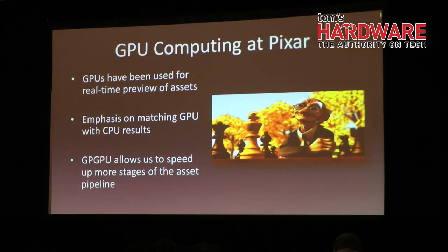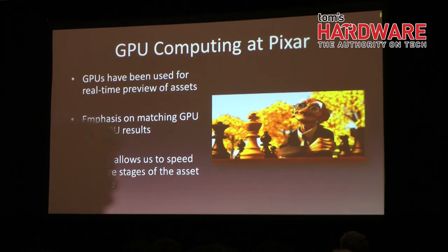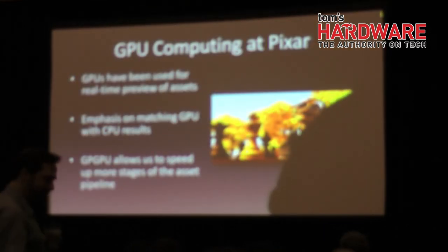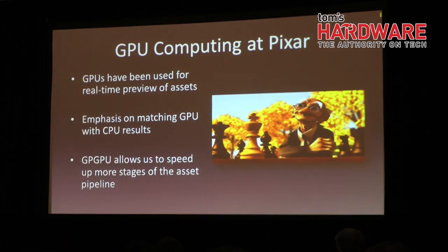Historically at Pixar, we have substituted GPU preview time for lengthy CPU render times. The goal of this is to reduce render times in our asset pipeline. Artists and TDs use GPUs early in development but later fall back into CPU farm renders using Pixar's RenderMan renderer, because of the limitations of desktop GPU renders such as lack of global illumination and the limited memory capacity of GPUs on our individual workstations.